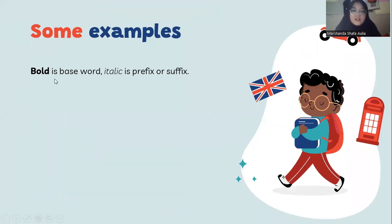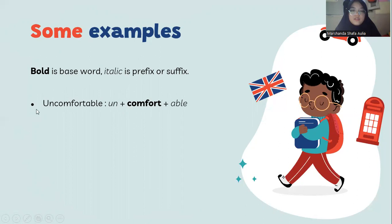Here are some examples. The guide for these examples is that the bold text is the base word and the italics are the prefix or suffix. First example: 'uncomfortable' — 'un-' is the prefix, 'comfort' is the base word, and '-able' is the suffix. Second example: 'redo' — 're-' is the prefix and 'do' is the base word.